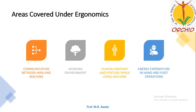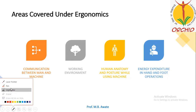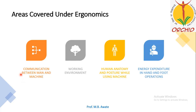We will deal with the areas covered under ergonomics, continuing from the last session. The areas covered under ergonomics are: communication between man and machine, working environment, human anatomy and posture while using the machine, and energy expenditure in hand and foot operations. There has to be a proper working environment so that the person will work with full efficiency and effectiveness.